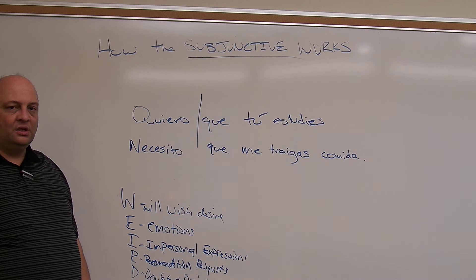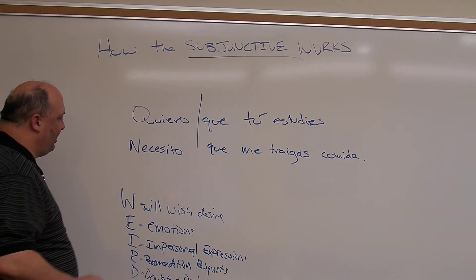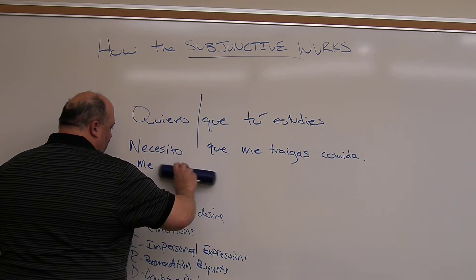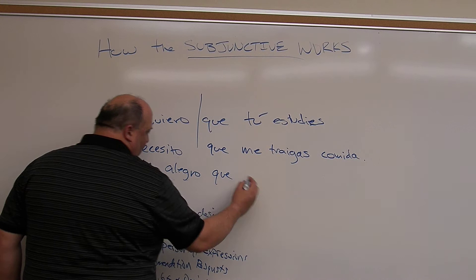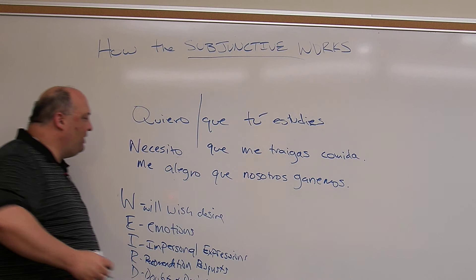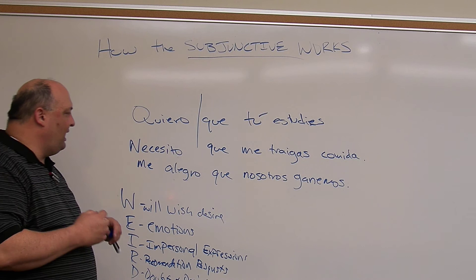That's what we're doing with all of these sentences — quiero que tú estudies, necesito que me traigas comida. For emotions: me alegro que nosotros ganemos — 'It makes me happy that we win.' Notice it's in the present tense — me alegro que ganemos — 'it makes me happy when we win.' Your book will have a ton of emotions that explain this category.